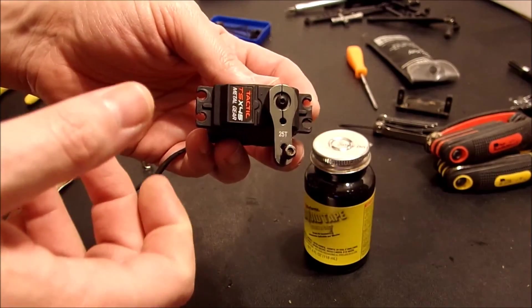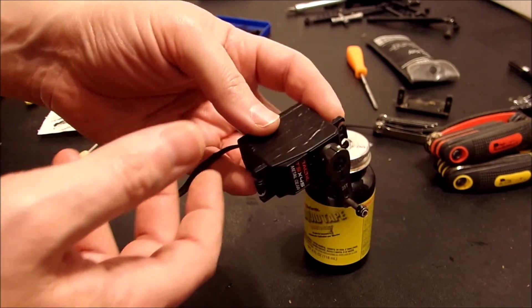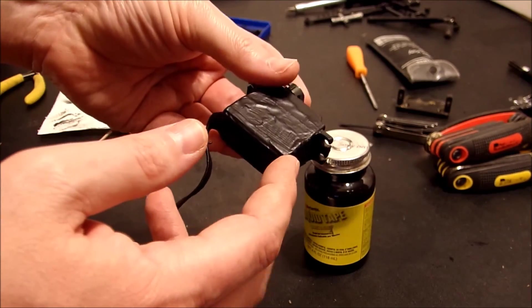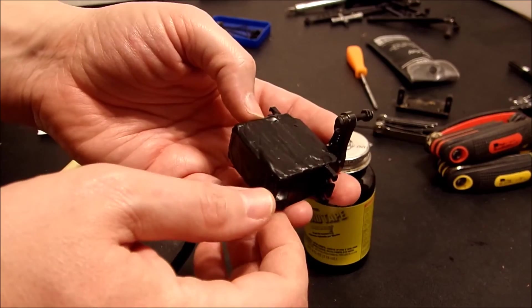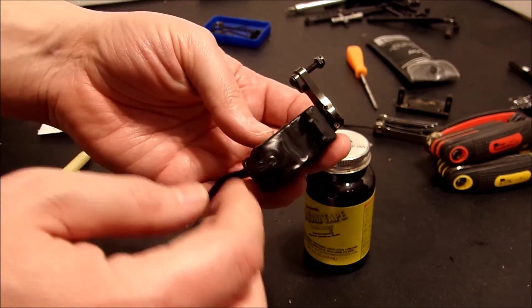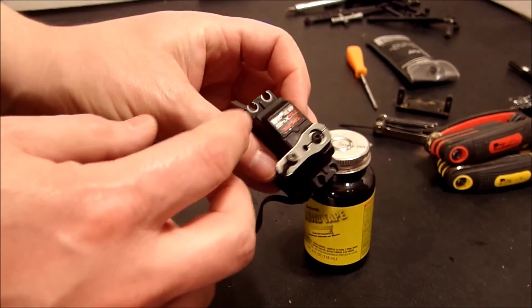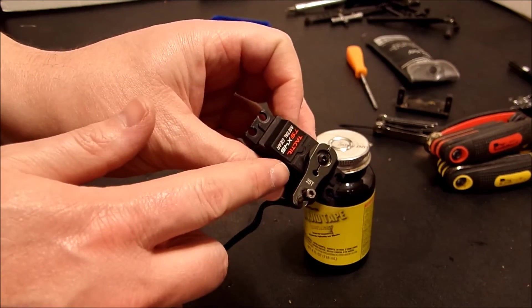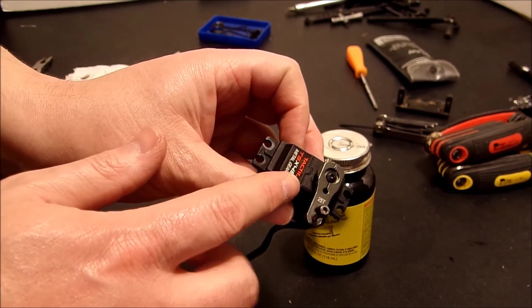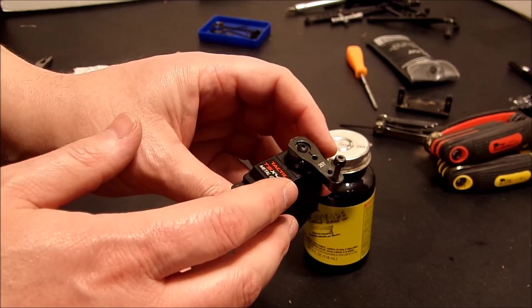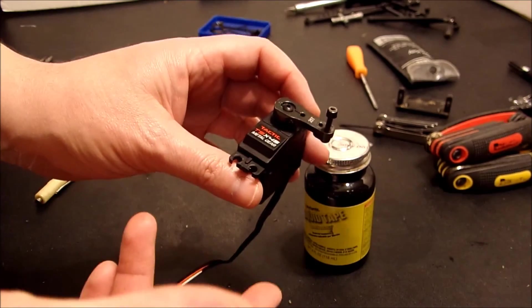Here we have our tactic servo ready to reinstall into our deadbolt. It has a generous coating of liquid electrical tape coating the outside of it and sealing all those seams especially here where the wire comes in as well. Now that we've replaced that plastic gear with a metal gear we should be good for a long long time and many many scale miles out on the trail without having to worry about that gear breaking and ruining our day.